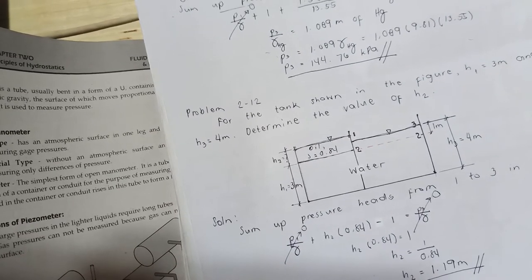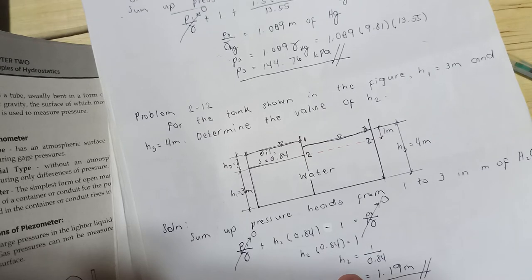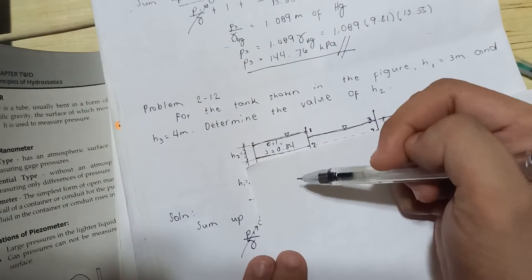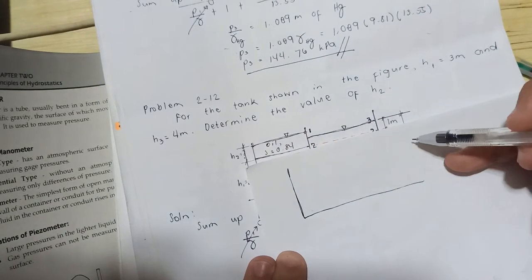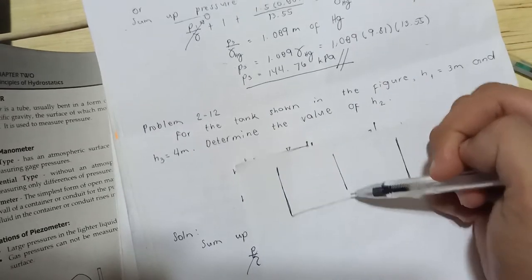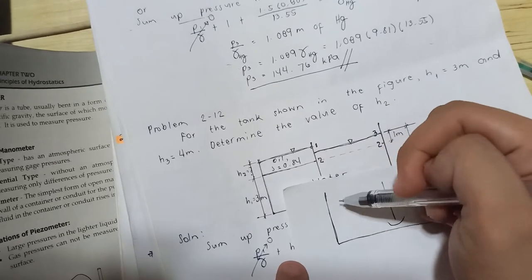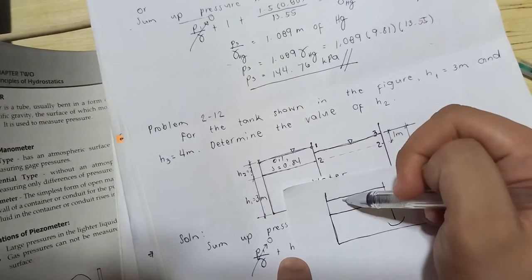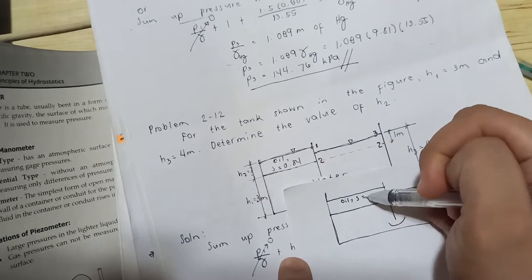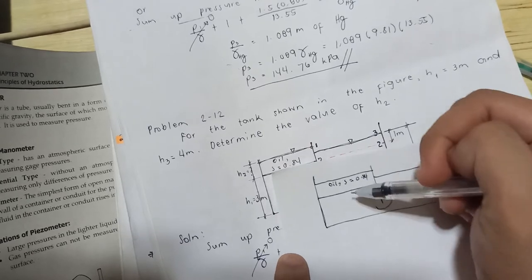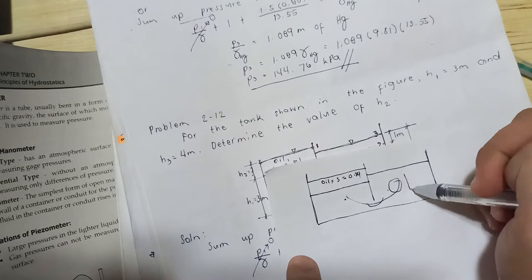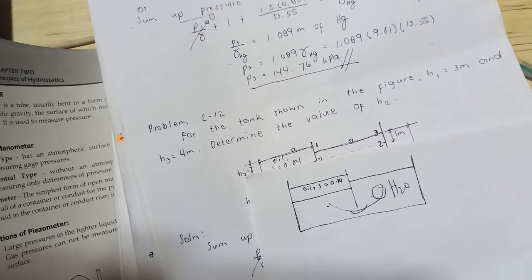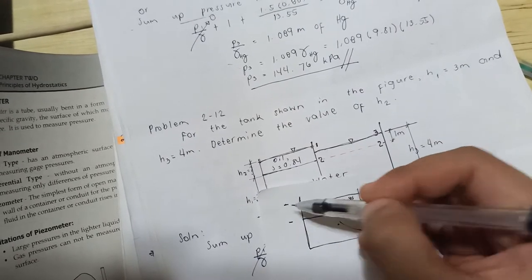Problem 12: For the tank shown in the figure, the first height h1 is 3 meters and the third height h3 is 4 meters. Determine the value of h2. The tank contains water and oil, so all heights will be expressed in meters of H2O.